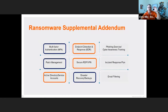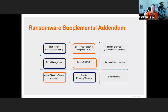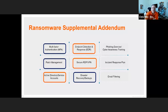The ransomware supplemental addendum was created by cyber insurance brokers and introduced to the industry in early 2021. It contains nine categories that cyber insurance brokers want to see positive responses to. The categories highlighted in orange are where PAM directly resonates and provides positive responses. The blue categories — including multi-factor authentication integration, patch management (if you're doing inventory of systems and privileged accounts), and disaster recovery and backups — are dotted-line areas where PAM should be able to integrate, ingest, and be configured to support.